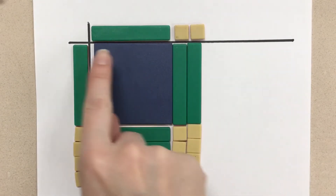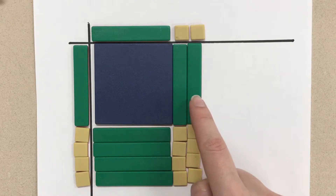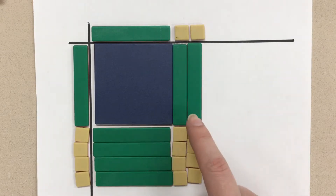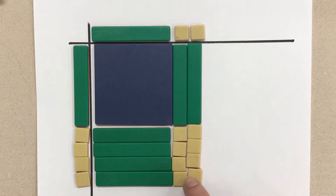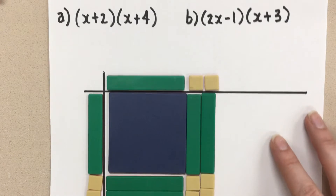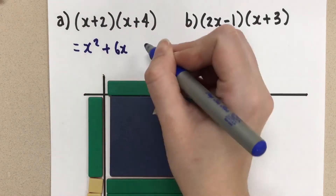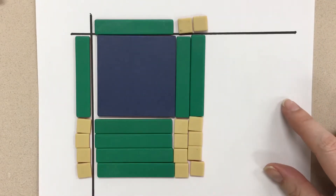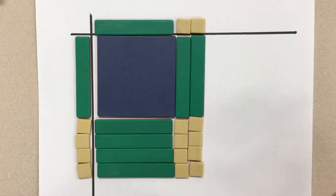Remember, we had (X plus 2) times (X plus 4), and the area in the middle is going to be our answer for the expansion of those two binomials. So what do we have here? An X squared, then counting the X tiles: 1, 2, 3, 4, 5, 6 X's. So we have X squared plus 6X. And then counting the 1 tiles: 1, 2, 3, 4, 5, 6, 7, 8. So our answer is X squared plus 6X plus 8. That's our answer for the expansion of these two binomials. So I'll write that in: X squared plus 6X plus 8. There we have an elementary manipulative helping us with some higher level math so we can really visualize what's happening and the concept of the area model.